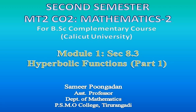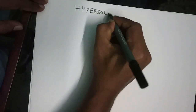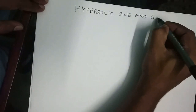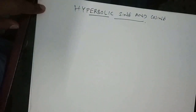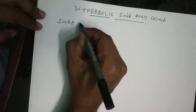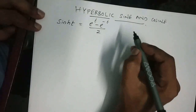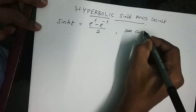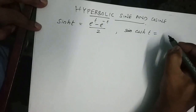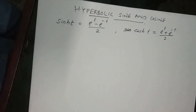We can discuss the section Hyperbolic Functions. First of all, we can talk about Hyperbolic Sine and Hyperbolic Cosine. Hyperbolic Sine is denoted by sinh(t) and is defined as sinh(t) = (e^t - e^(-t)) / 2. These are the Hyperbolic Sine and Hyperbolic Cosine.